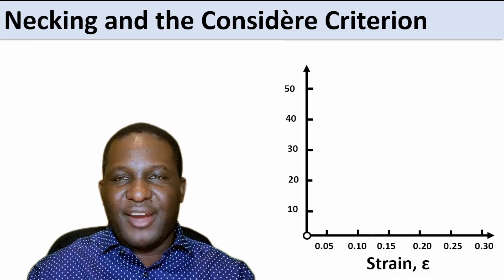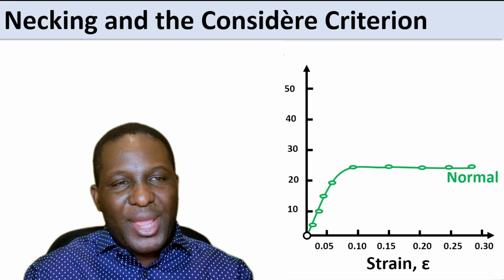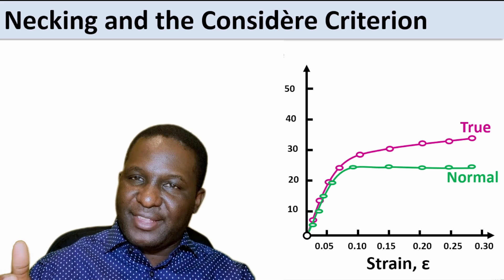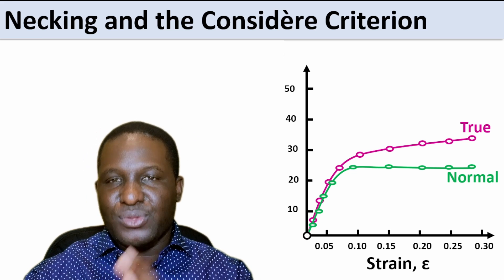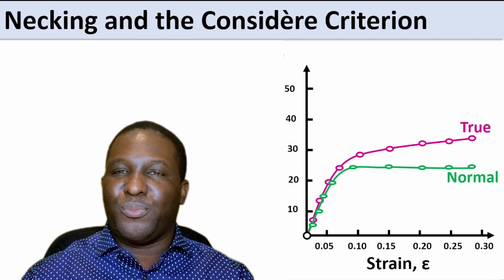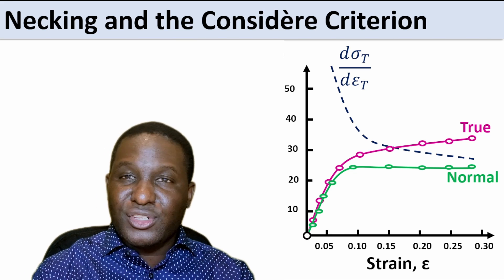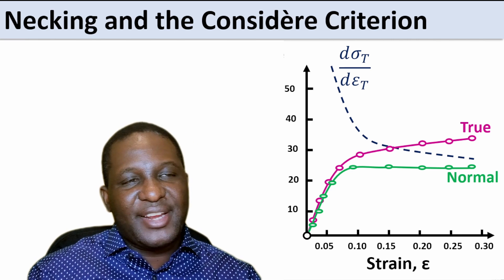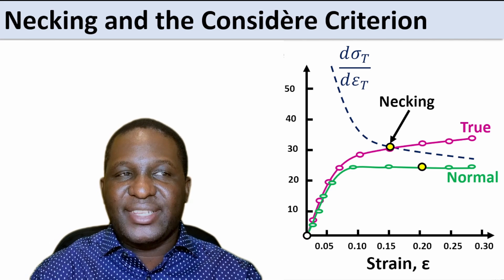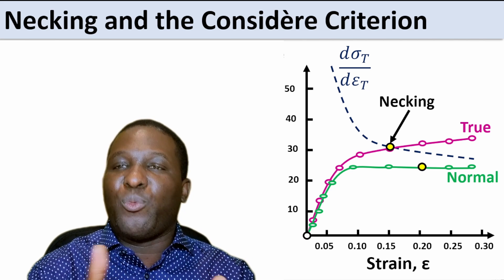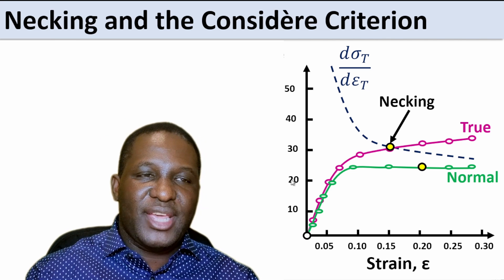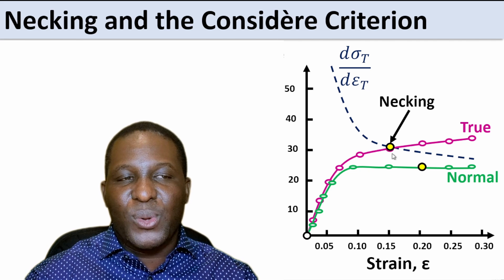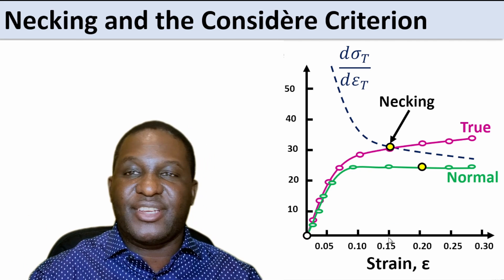Let's illustrate this graphically. We have a normal stress–strain diagram, and if we convert it to a true strain diagram, there is an increase in stress due to the true stress value. If we plot on top of this graph the change of true stress with true strain — which is basically a slope — there is a point of intersection between the true stress curve and this slope. That point is where necking will occur. On the true stress plot, necking initiates at a strain of about 15% in this material.